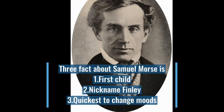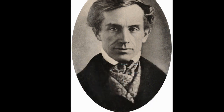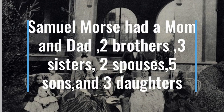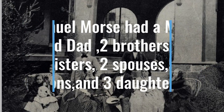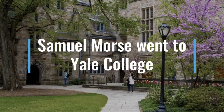Three facts about Samuel Morse: he was the first child, his nickname was Finley, and he was the quickest to change moods. Samuel Morse had a mom and a dad, two brothers, three sisters, two spouses, five sons, and three daughters. Samuel Morse went to Yale College.